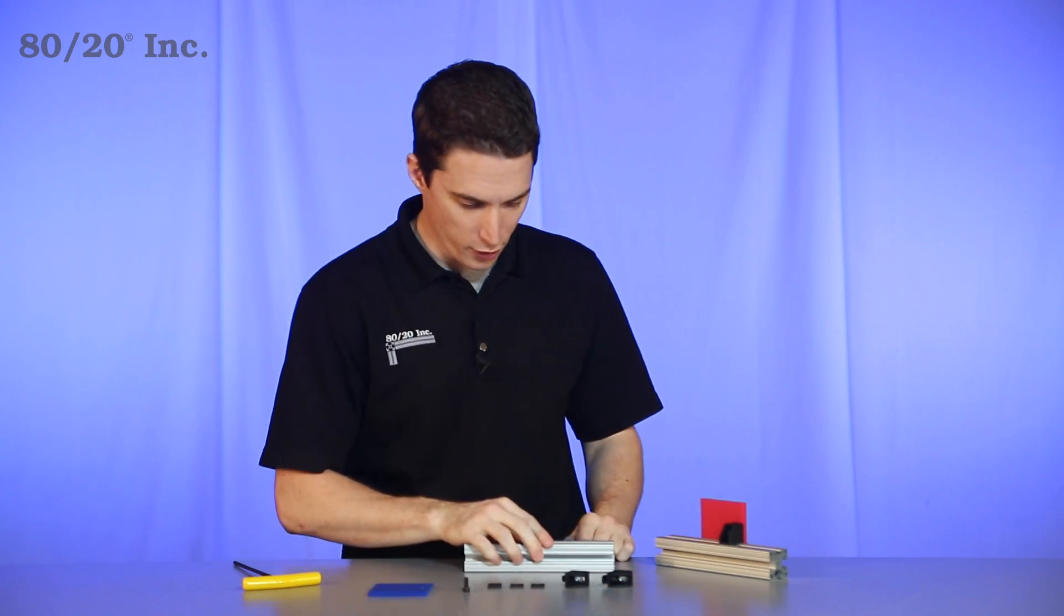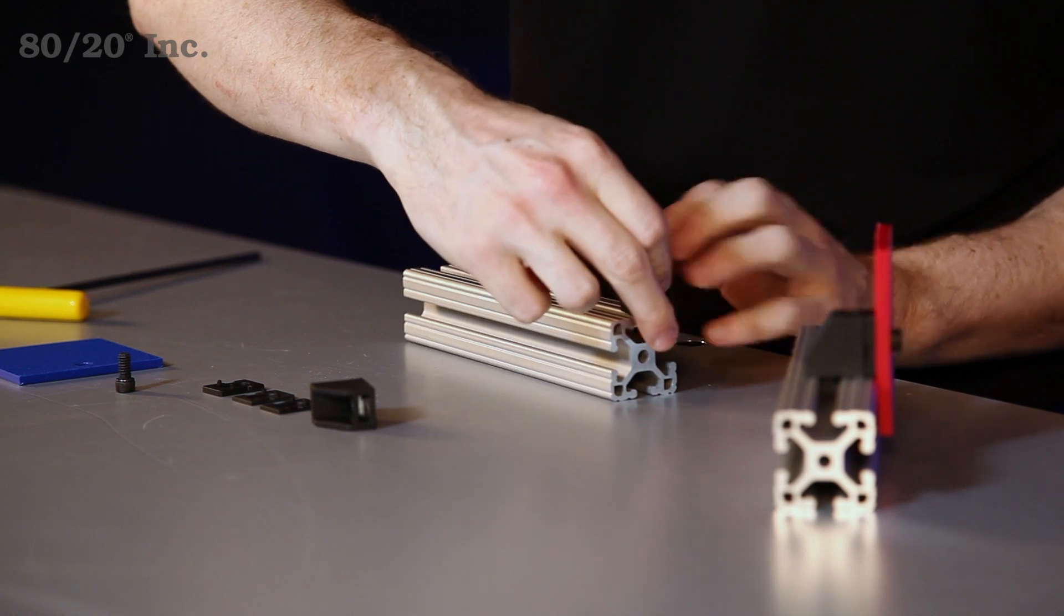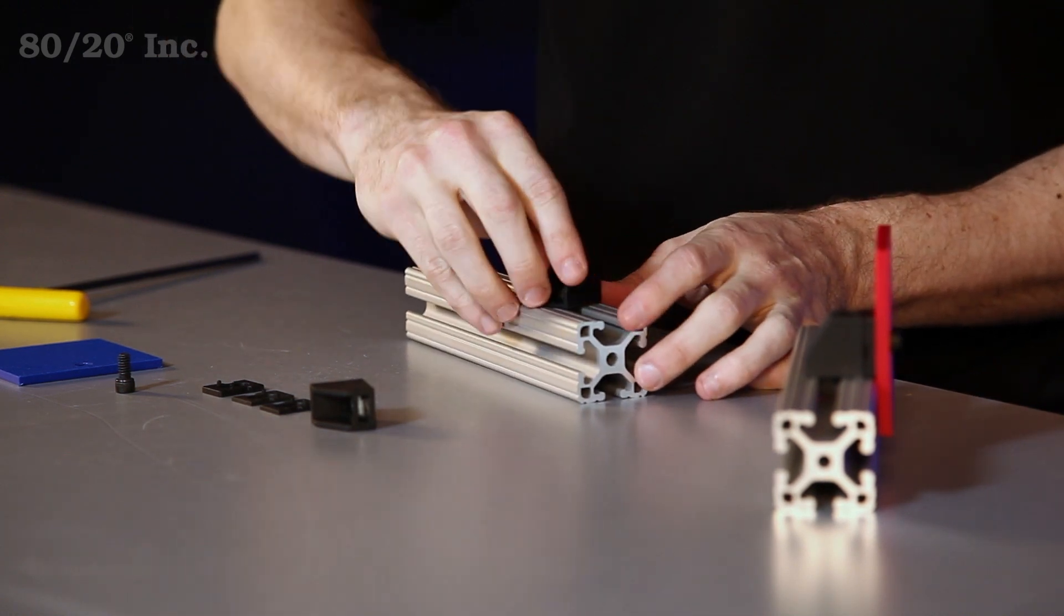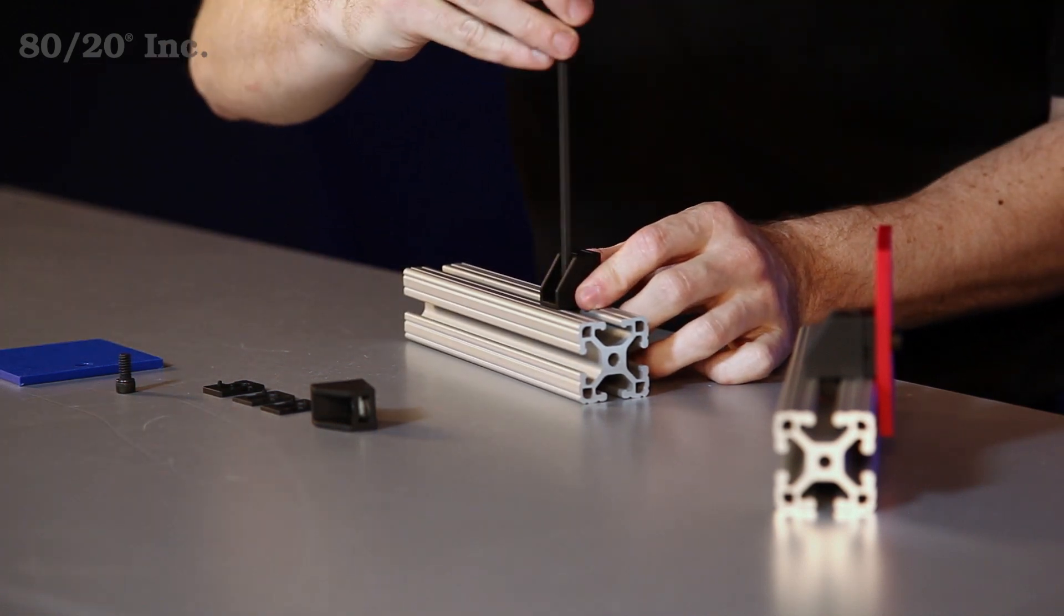To get started, we'll take our profile and our standard block and slide it into the open T-slot. Once we get that into place, we'll lock it down with our wrench.